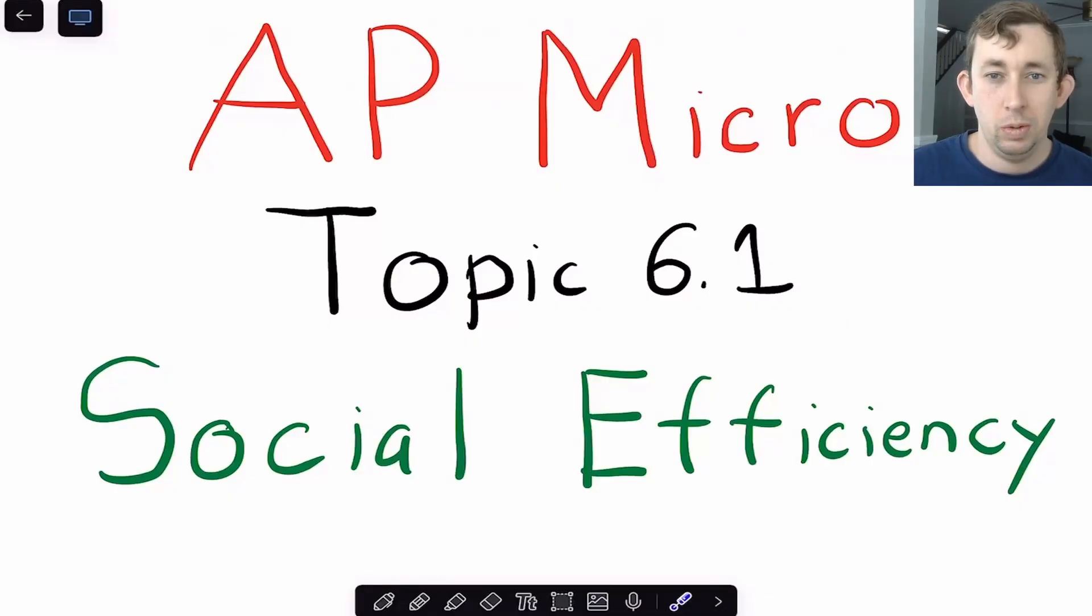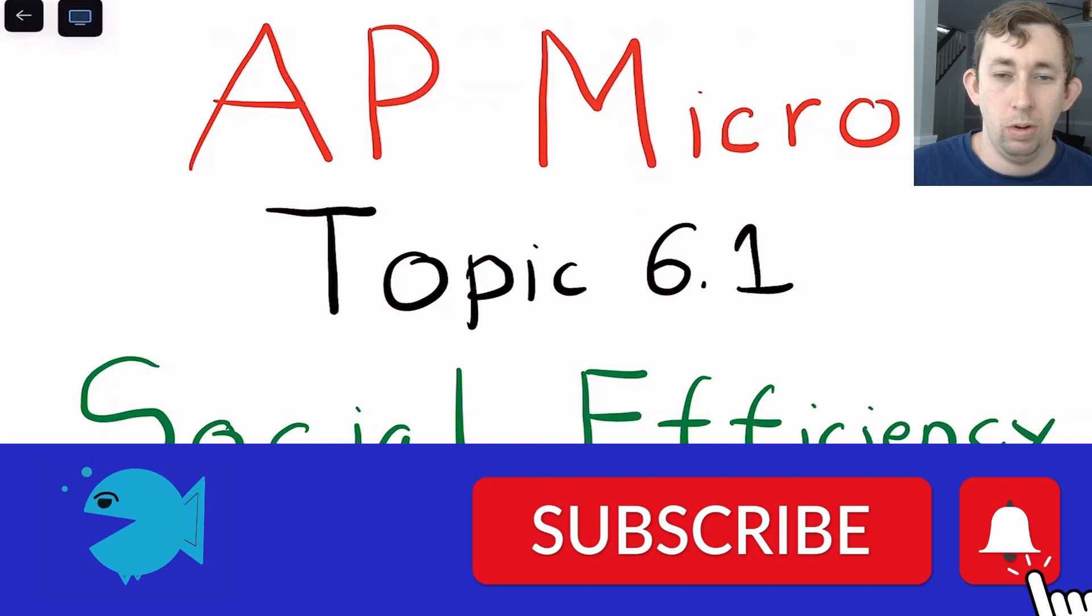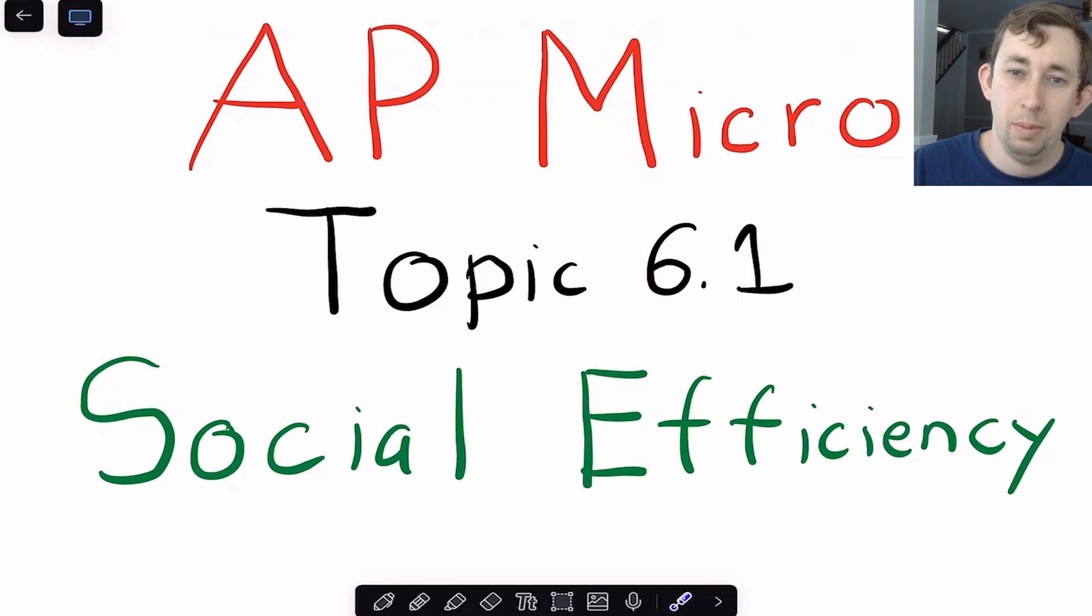Hi guys, welcome back to In Case of Econ Struggles. Welcome to another AP Micro Struggle. Today I'm talking about topic 6.1, which is about social efficiency or socially optimal outcomes. Timestamps are below if you would like to jump around, but let's get right into it.